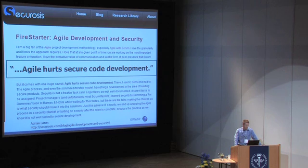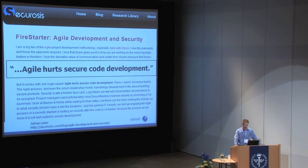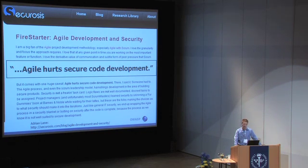When I talk to developers, a lot of them tell me that Agile software development and security really don't go together. There's a very big focus on getting functional software produced very quickly. This blog article from Adrian Lane over at Securosis had a quote that really seemed to sum it up: Agile hurts secure code development. What I'd like to do when discussing Microsoft SDL Agile is prove that point incorrect and show how we can use security activities during Agile development and include them in our efforts.